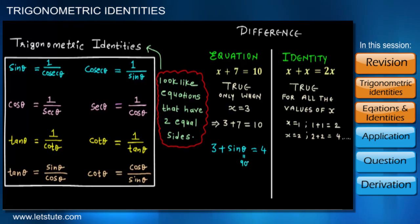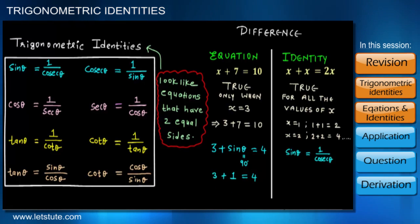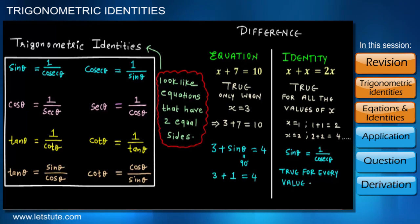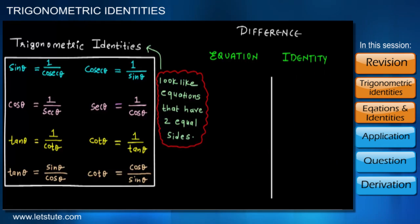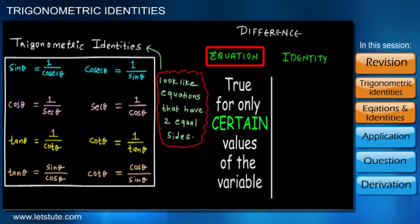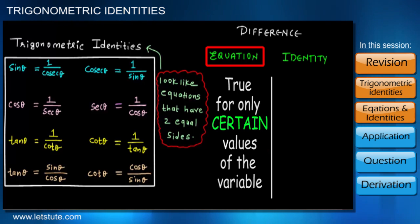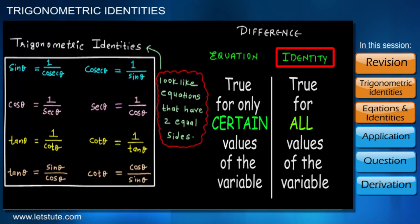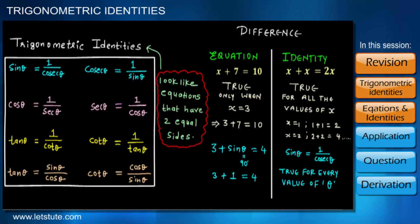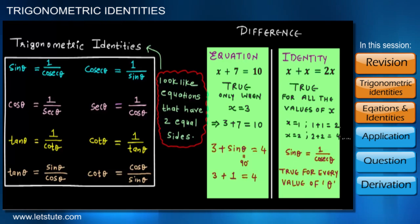Likewise, if we take a trigonometric expression such as 3 plus sin theta equals 4, this is true only when theta is equal to 90 degrees. On the other hand, sin theta equals 1 upon cosec theta is true for every single value of theta. Therefore, it is very important to know the difference: an equation is true only for certain values of the variable, whereas an identity is a special equation which is true for all values of the variable.